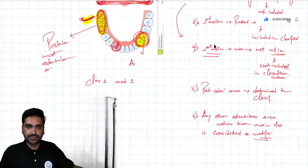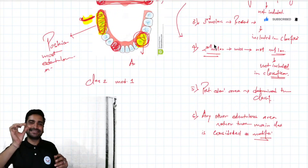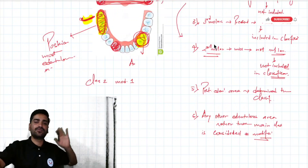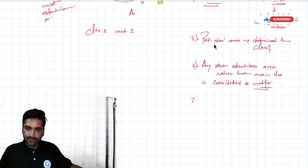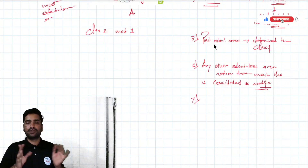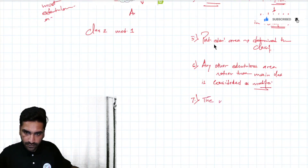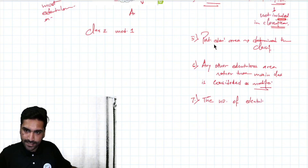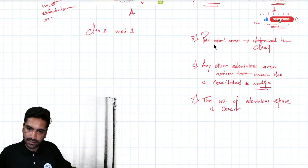If one more space is missing it becomes Modification 2, and so on. Rule number seven: the number of edentulous spaces is taken into account in the modification, not the number of missing teeth. So if there are two additional edentulous areas it is Mod 2, regardless of how many teeth are missing in those spaces.